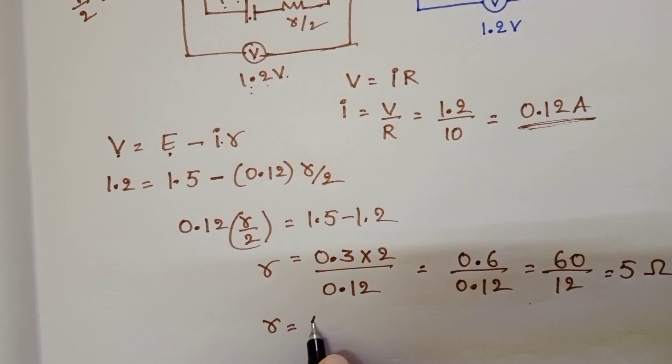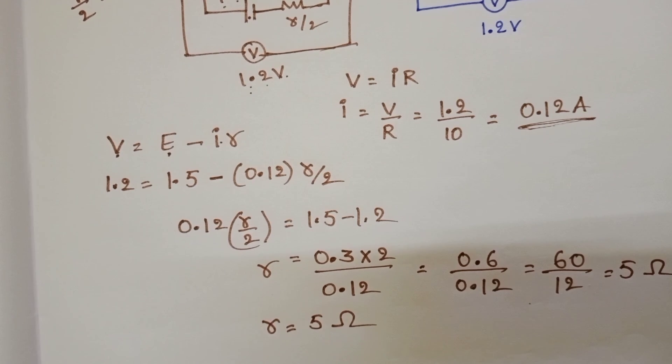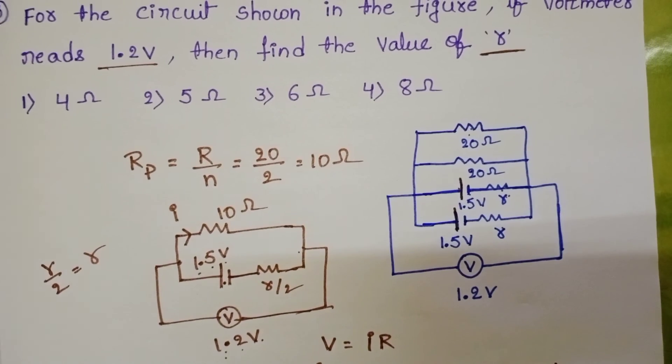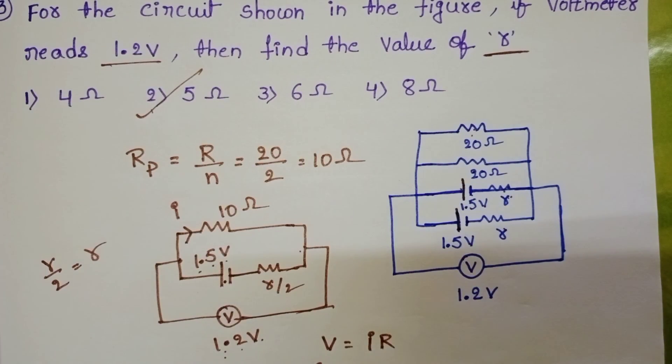And from this, 0.6 by 0.12 that is equals to 60 by 12 equals to 5 ohm. So internal resistance is equals to 5 ohm. Check the given options. Second option is correct. Eight, four, three.